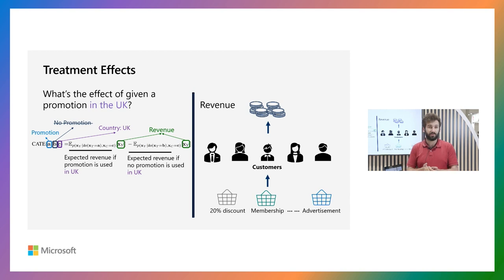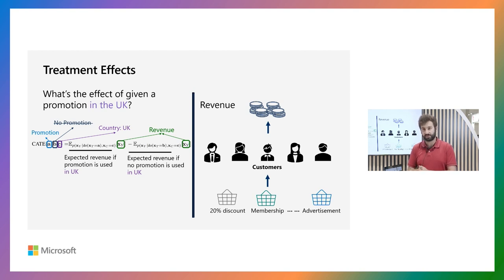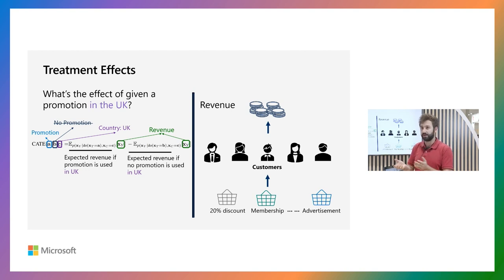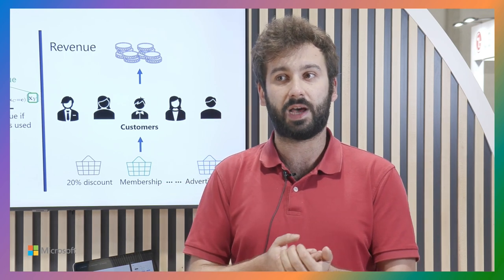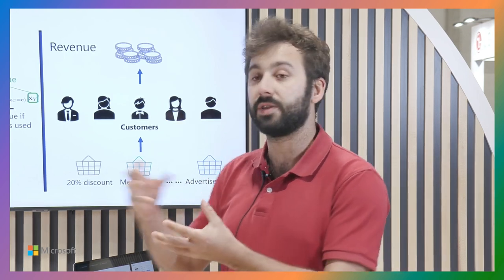In many scenarios, you might want to be more specific rather than looking at the full population. You would look at a so-called conditional average treatment effect. In a sales scenario, for example, we would ask: what's the effect of giving this promotion in the UK, in the US, or in some other region or subgroup of your customers? Rather than just looking at this interventional distribution, you actually condition on some other variable.